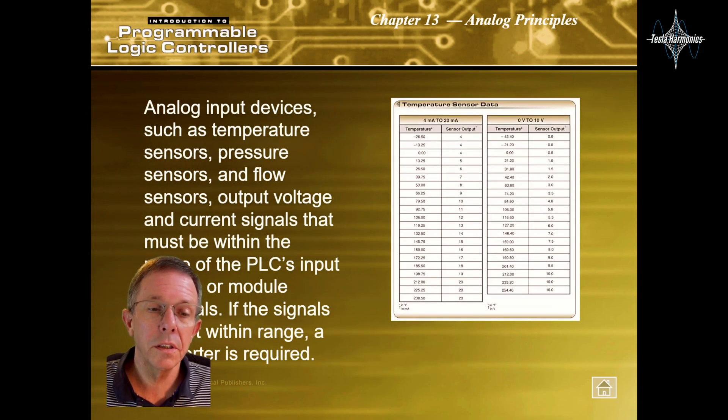Analog input devices such as temperature sensors, pressure sensors, and flow sensors output voltage and current signals that must be within the range of the PLC's input section or module terminals. If the signals are not within a range, a converter is required.